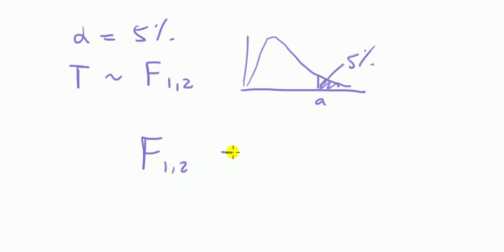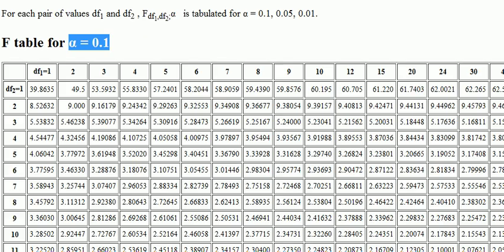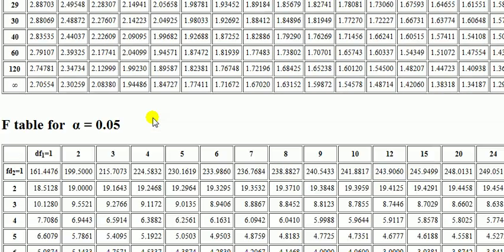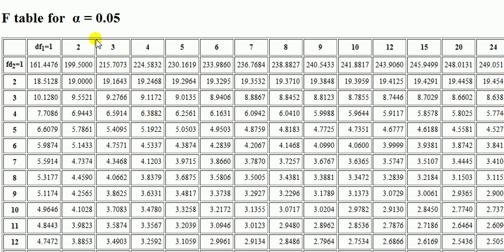Now the order is important, so f(1,2) is not the same as f(2,1) in terms of the table. So we want f(1,2), that's 5%, I go to the 5% table. Now f(1,2), 1 came first, that goes along with the numerator, or in this case it's called df1, that's 1, and the denominator, df2.